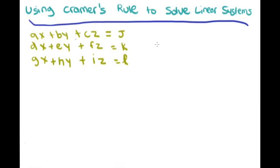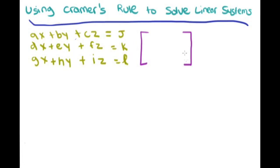For three by three systems it takes longer to substitute because you have to substitute twice, so it's easier to use Cramer's Rule. For a two by two system, Cramer's Rule would actually take longer. So let's find out how to use Cramer's Rule to solve a three by three system.